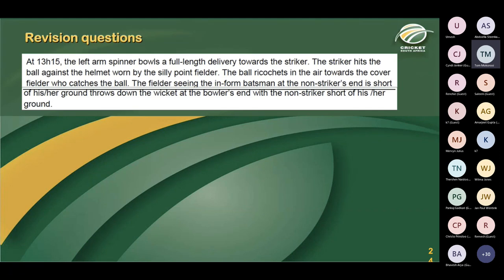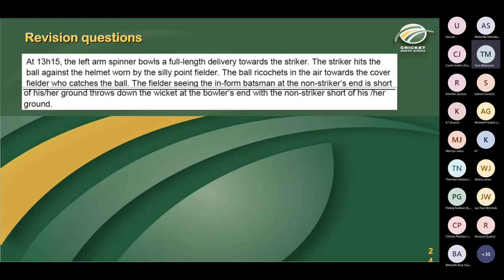First revision question for this evening: at 13:15, the left-arm spinner bowls a full-length delivery. The striker hits the ball against the helmet worn by the silly point fielder. The ball ricochets in the air towards the cover fielder who catches the ball. The fielder, seeing that the in-form batter at the non-striker's end is short of his or her ground, throws down the wicket at the bowler's end with the non-striker short of ground. There is an appeal. What is your decision — out or not out? If out, which mode of dismissal, and is the non-striker or striker out?